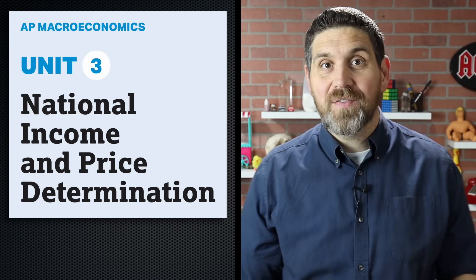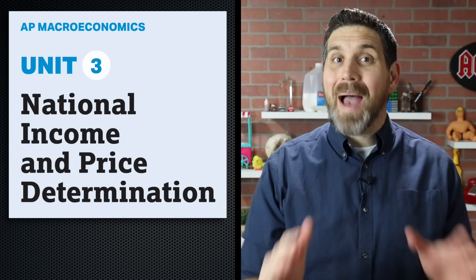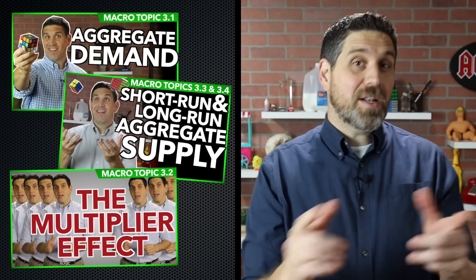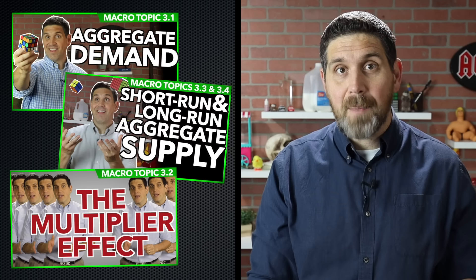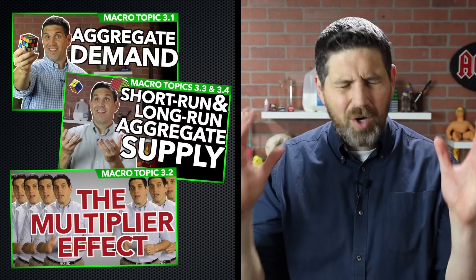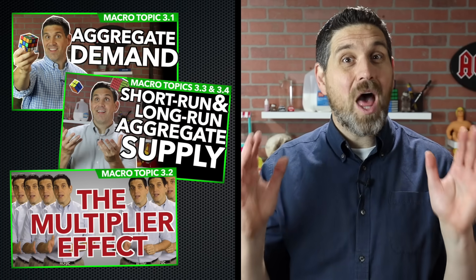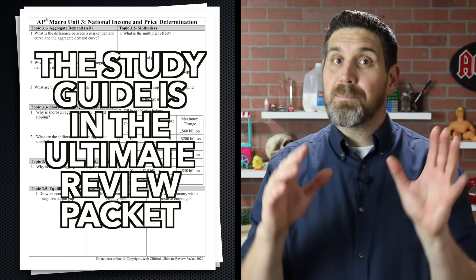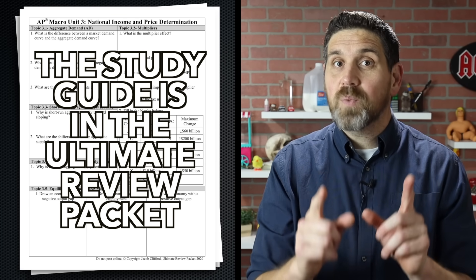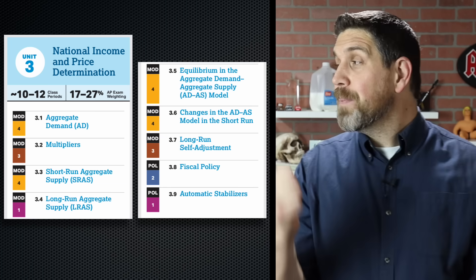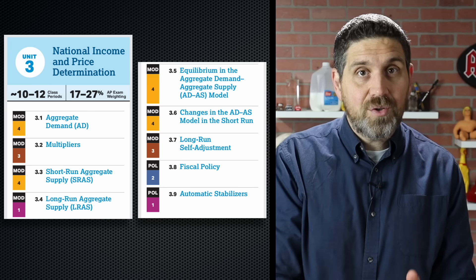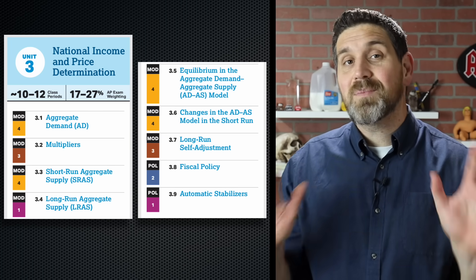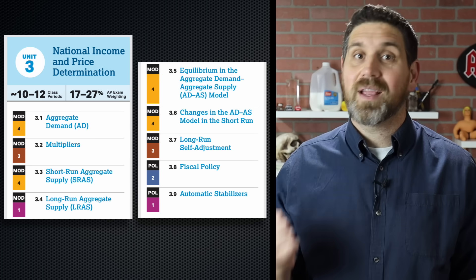Hey, how you doing econ students? This is Jacob Clifford. It's time for the macroeconomics unit three summary video. I already made a bunch of videos on YouTube covering these topics, but this video is about getting it back in your brain and helping you practice. Make sure you've downloaded and printed out the unit study guide that goes with this video. I'm focusing on the AP economics curriculum, but if you're a college student or taking the CLEP exam, this is all the same stuff — introductory macroeconomics.